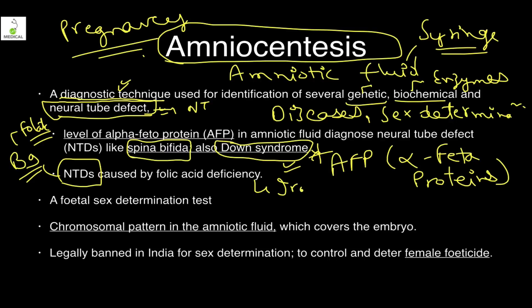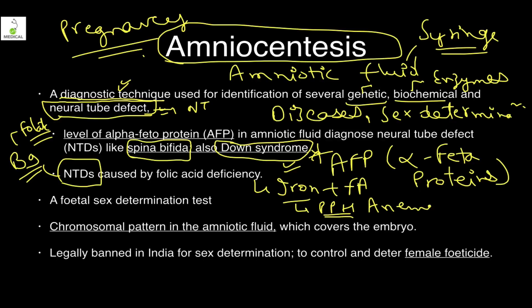Neural tube defects are caused when the mother does not have adequate vitamin B9 — folate or folic acid. So whenever a pregnant woman is seen, she is given iron plus folic acid tablets. Iron is given to prevent postpartum hemorrhage and to control anemia, while folic acid is given to prevent neural tube defects.